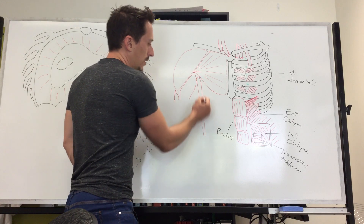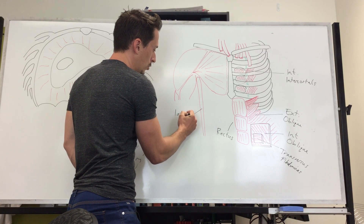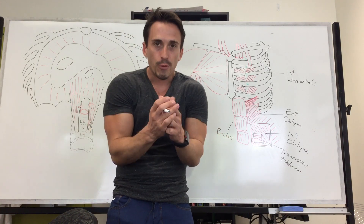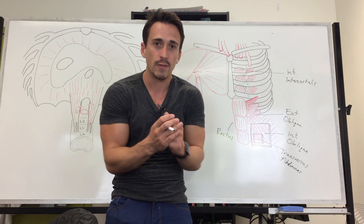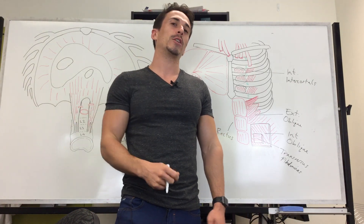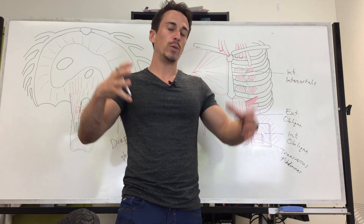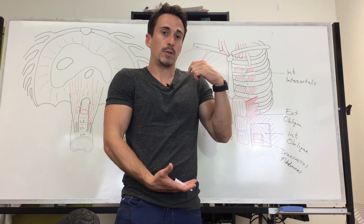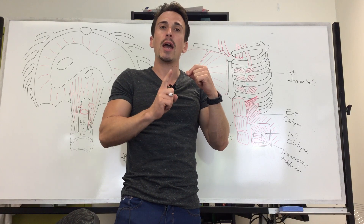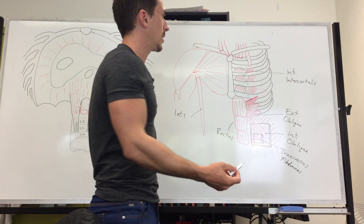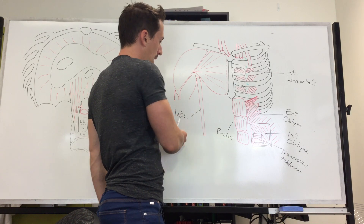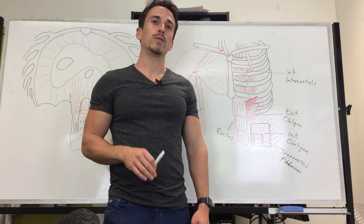The last muscle is the latissimus dorsi — the lats. When it contracts, it brings your thoracic cavity forward and compresses it, forcing you to exhale. So there are a number of muscles involved in expiration: their goal is to reduce thoracic volume and compress the abdomen, increasing pressure inside the thoracic cavity and lungs so that air is forced out. To summarize, the muscles for expiration are the internal intercostals, external and internal obliques, transversus abdominis, rectus abdominis, and the latissimus dorsi.